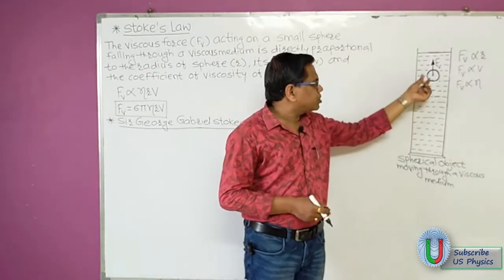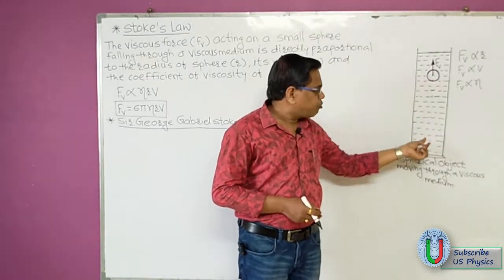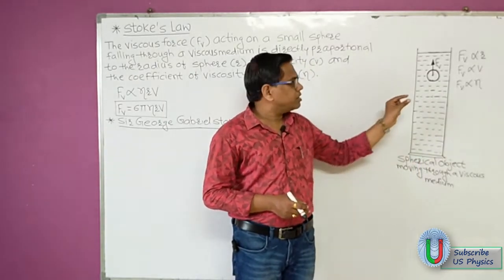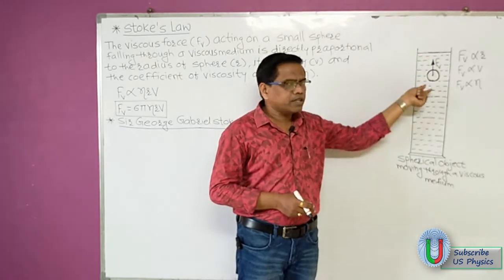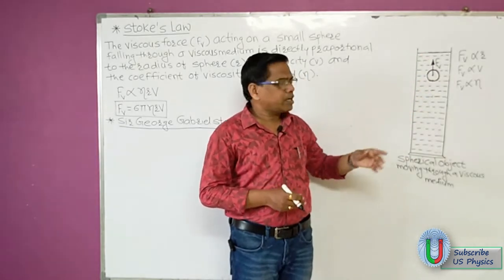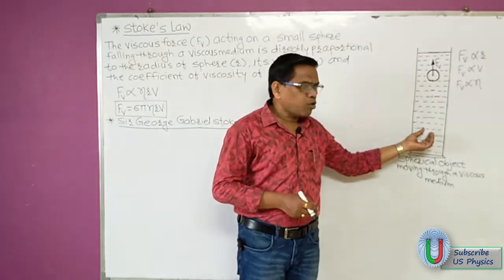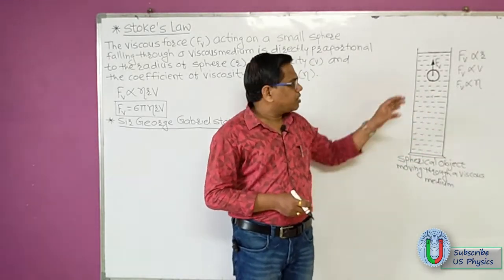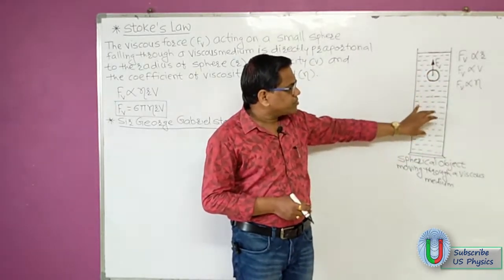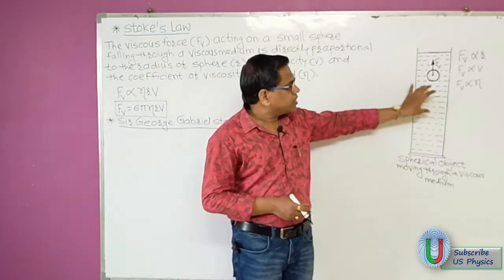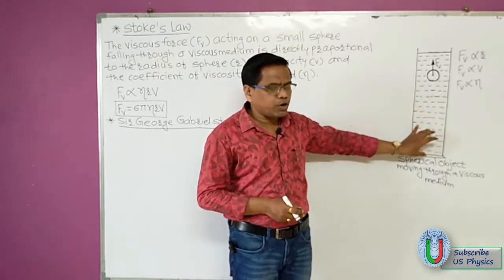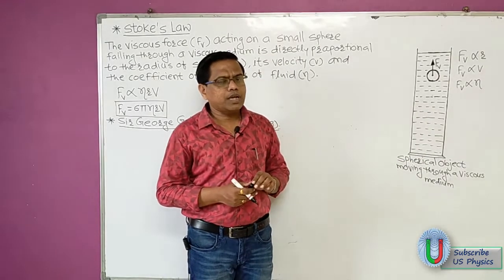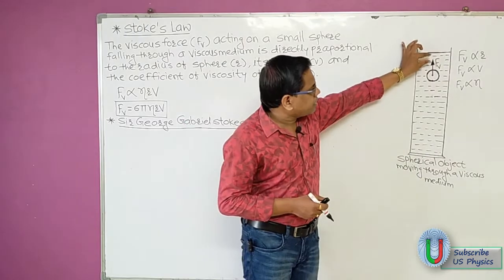Now carefully observe how the object falls to the bottom. You will find that initially the object accelerates, then it is acted upon by the force due to viscosity of this liquid, and then its acceleration becomes zero. It attains a uniform velocity and then moves in the downward direction.